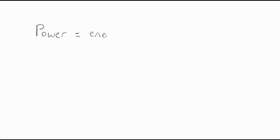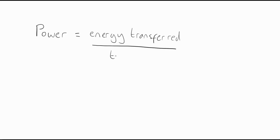The equation for power is this: power is equal to the energy that has been transferred divided by the time it took to do that. Energy is measured in units called joules, and time is always in seconds — so remember, if the question gives it to you in minutes or hours, you must convert it first. This means that the units for power are joules per second.